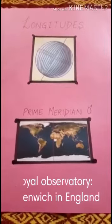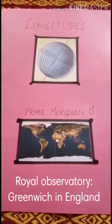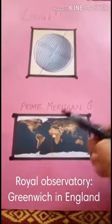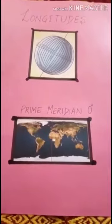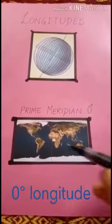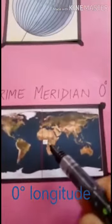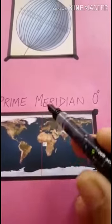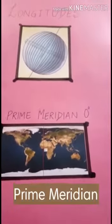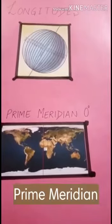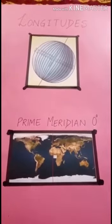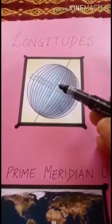According to an international agreement, the longitude passing through the Royal Observatory at Greenwich in England, United Kingdom, is accepted as zero degree longitude. As you can see here, zero degree longitude — this is the prime meridian. It is called the prime meridian.